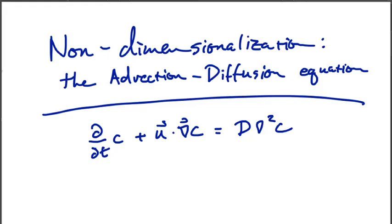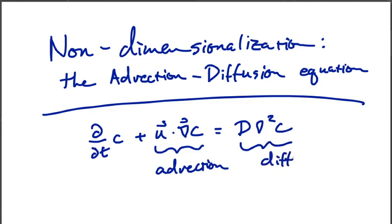We'll take our next step in non-dimensionalization by considering a system with two terms: the advection-diffusion equation. This is a partial differential equation for the evolution of some quantity C that is being influenced by both advection and diffusion. The velocity U here is just some prescribed constant — some wind, some flow — and C is being carried along by it while also diffusing.